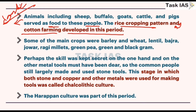Rice cropping patterns and cotton farming developed in this period. From Neolithic we know that agriculture and village settlements had developed, but these stages of development were not uniform in all places. With time, where metals were discovered, people got expertise in those areas. Some main crops were barley, wheat, bajra, and jowar.